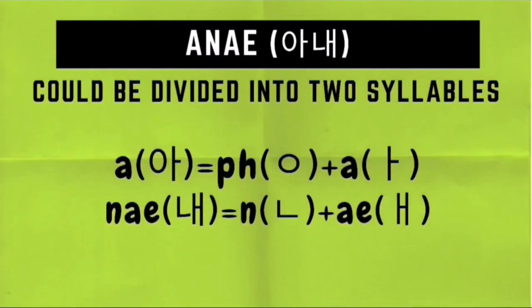How do we write Ane in Hangul? This is composed of just two syllables. For the first syllable, A, we need to draw first a no-sound or placeholder ieung, followed by an A character. For the second syllable, Ne, we need to draw first a nieun character followed by an E character. We just need to combine the Hangul for each of these two syllables to write Ane in Hangul.